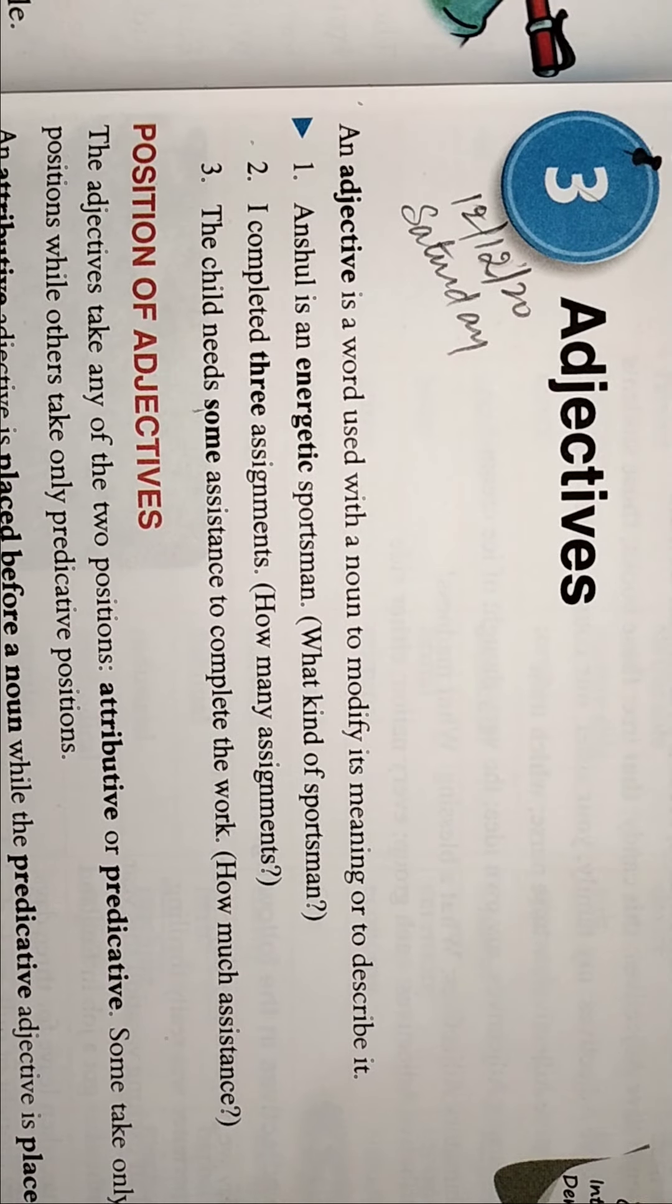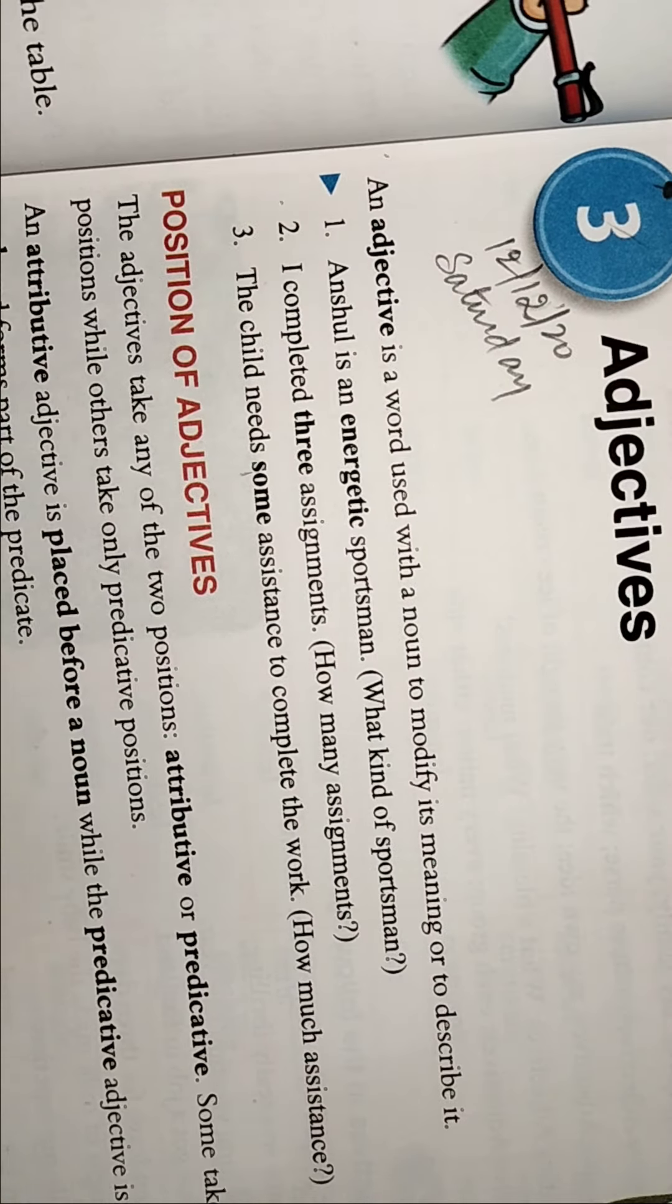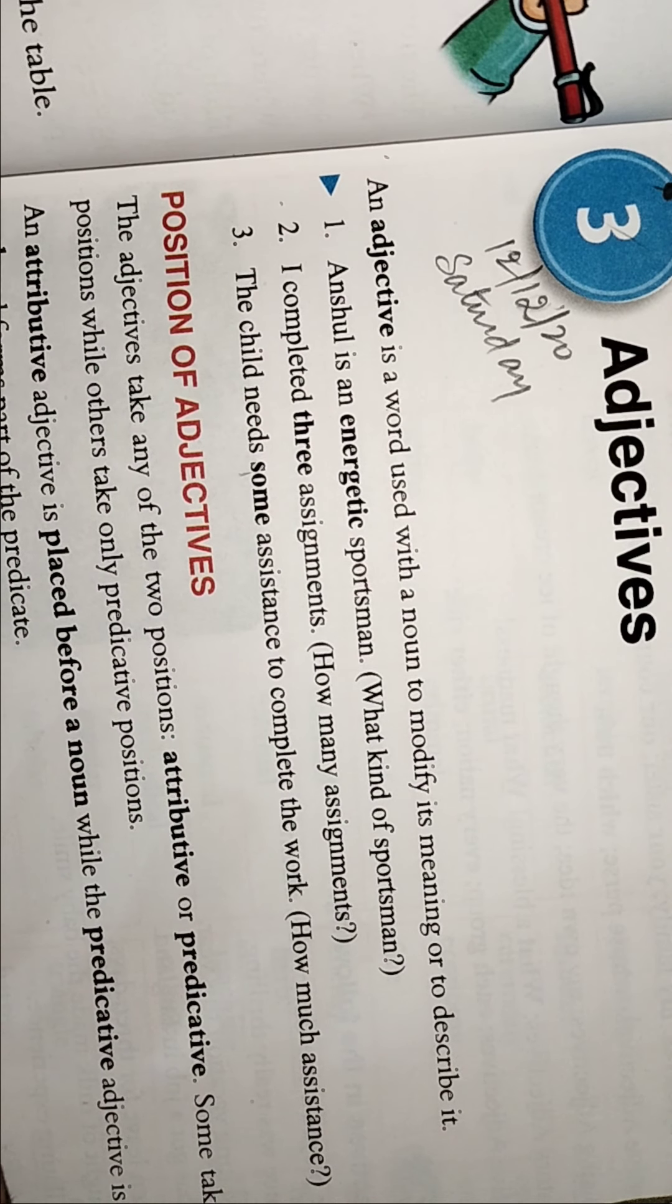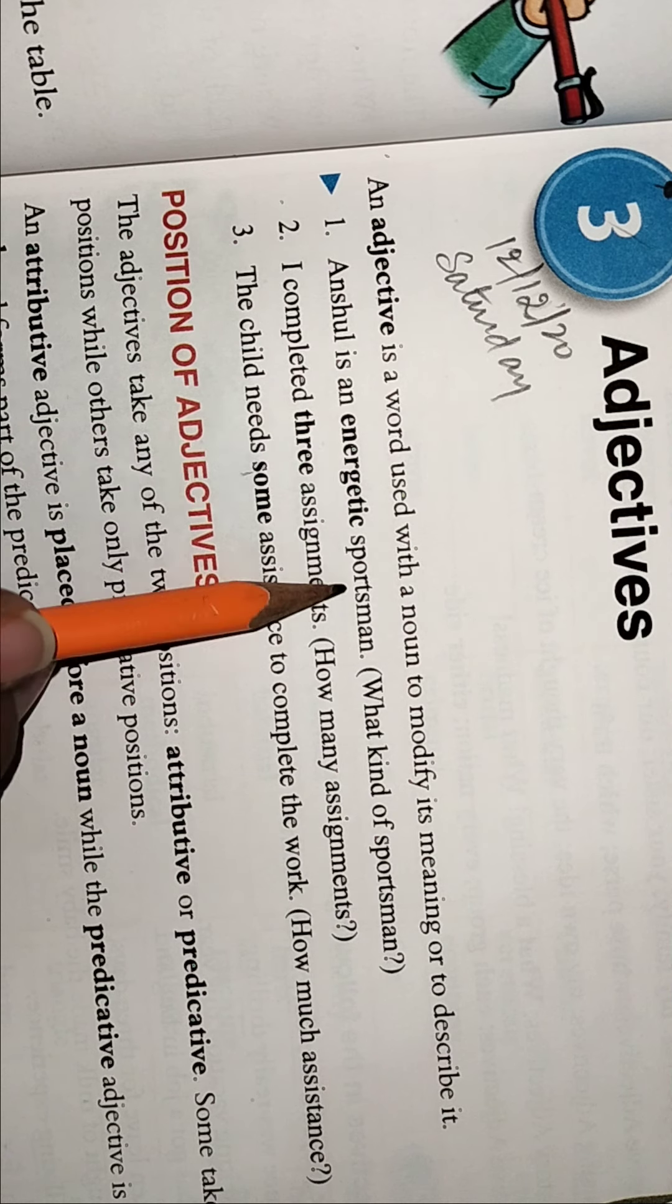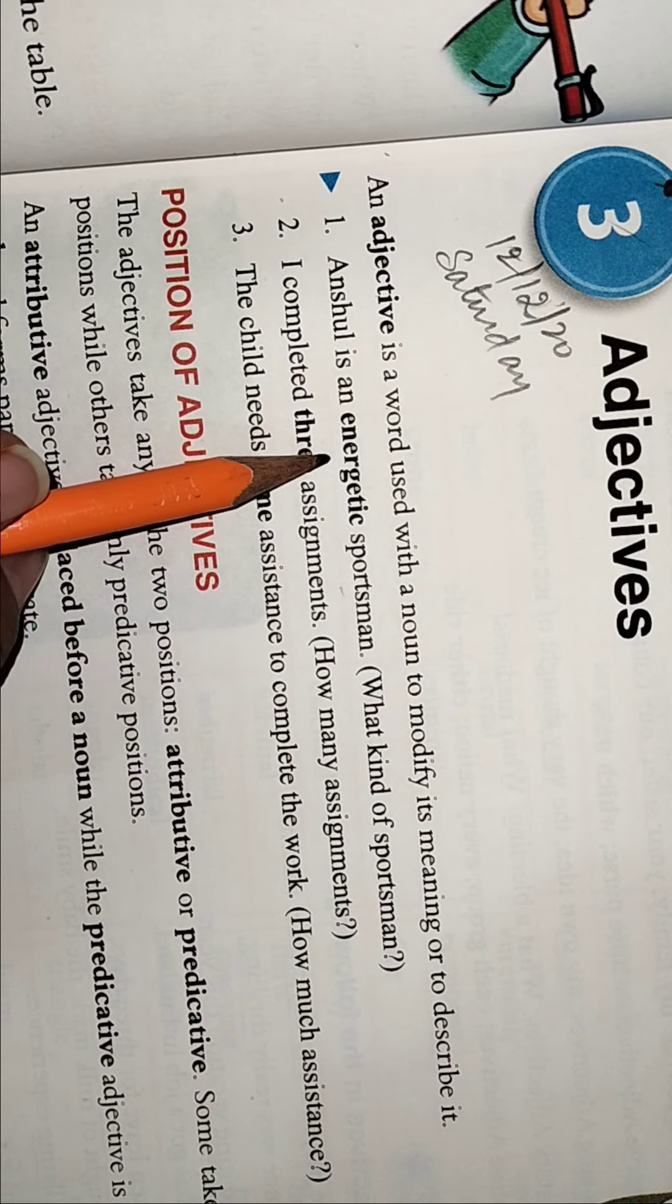It's a word used with a noun to modify the meaning, to describe it. As you already know, it's nothing new. It describes the noun, it modifies the noun. So Anshil is an energetic sportsman means what kind of sportsman he is.